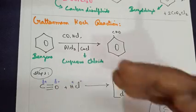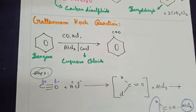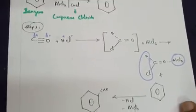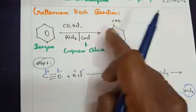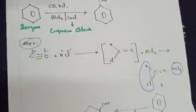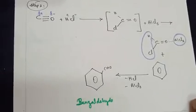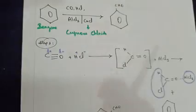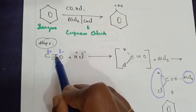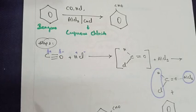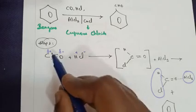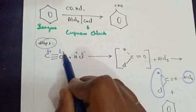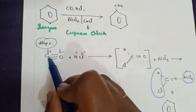The mechanism of the Gattermann-Koch reaction was asked in a previous exam, so I am providing it here. First, we treat carbon monoxide with HCl. In CO, there is a triple bond between carbon and oxygen. Since oxygen is more electronegative, it attains a partial negative charge and carbon attains a partial positive charge.